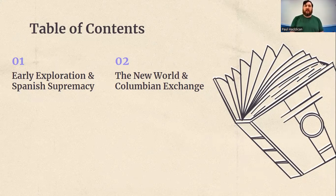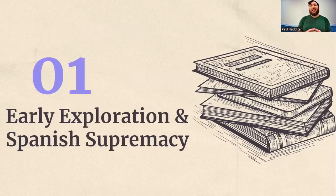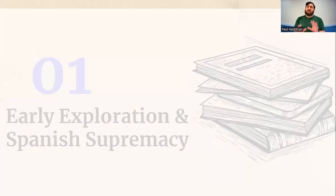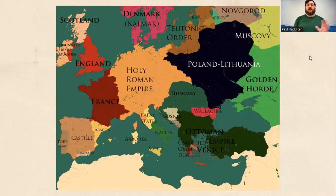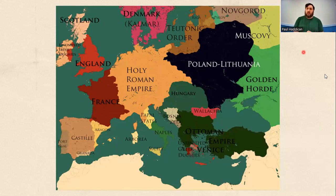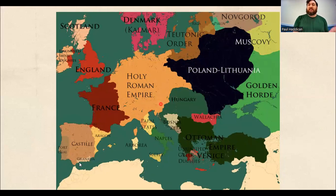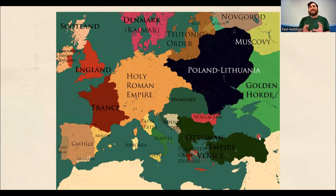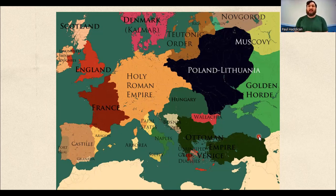Getting started with topic one, we're going to look at early exploration and Spanish supremacy. We're going to look at this map. I'm sure you're thinking, what the hell — why are we looking at all this? A lot of these don't exist anymore today, right? We don't have the Holy Roman Empire, we don't have Castile, we don't have the Ottoman Empire. So why are we looking at this map? We're looking at it because it gives us an idea of how many different powers, how many different people are living and existing in Europe, how many rulers and people are fighting with each other and have competing interests.